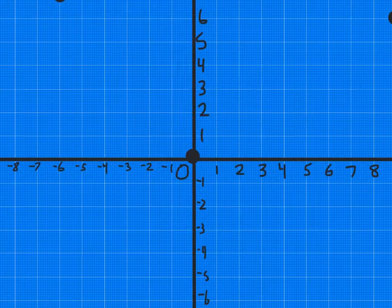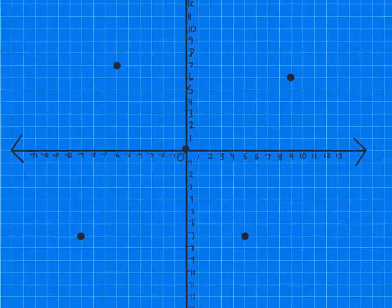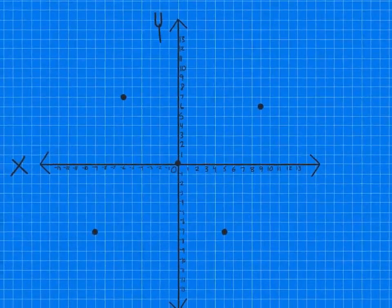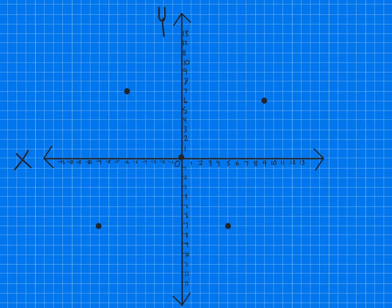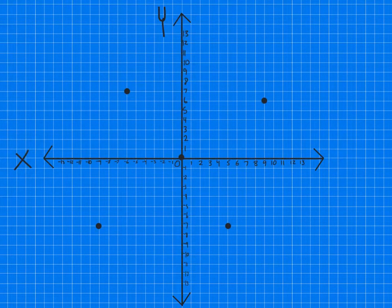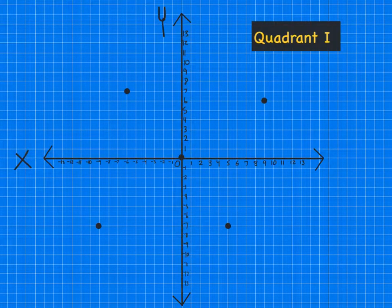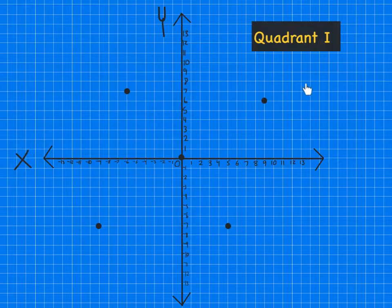So how does that affect our points? So let's zoom back out here. Let's take a good look at our points. Let's start with quadrants. So quadrant one will always be in the top right corner where it is positive, positive. So this point will be in quadrant one.